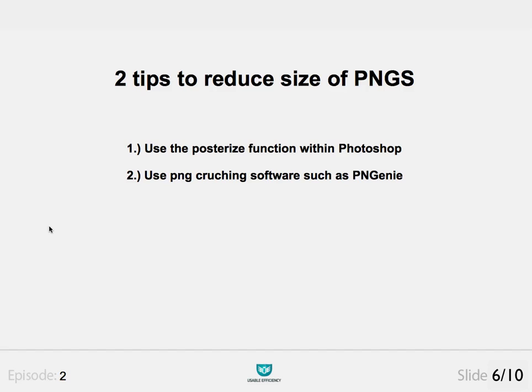There are quite a few things you can do to reduce the size of your PNGs, but there are certainly two that I use daily when exporting them. You could spend hours or even days trying to crunch your PNGs to the lowest possible file size, but you have to be pragmatic. The first tip is to use the Posterise function within Photoshop. The second is to use external PNG crunching software such as PNG Genie, which is a Mac OS X app — there are certainly other options for Windows and Mac OS X as well.